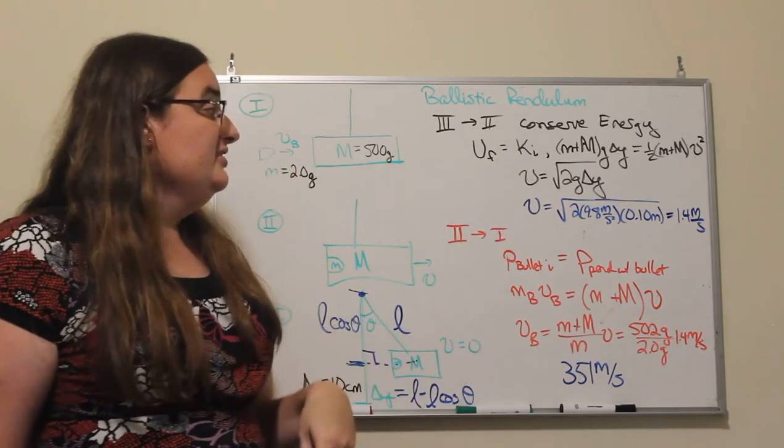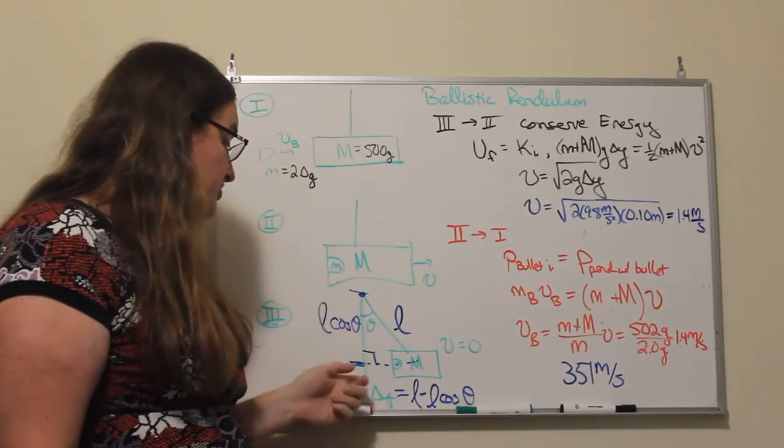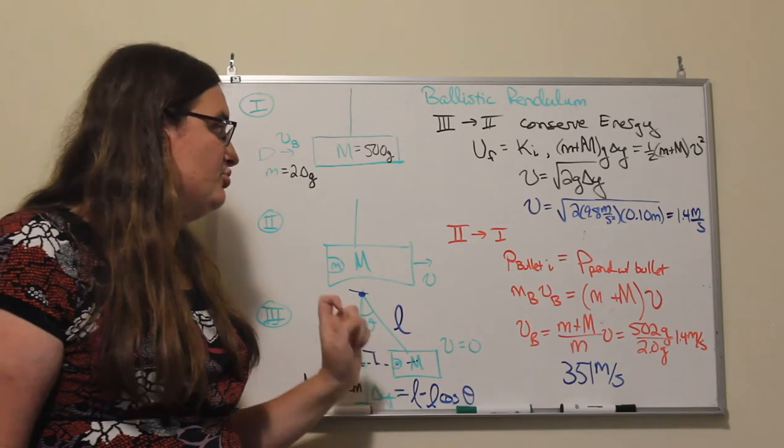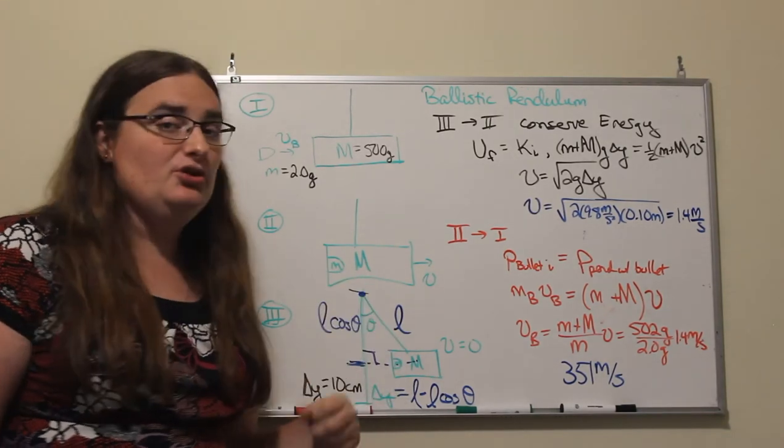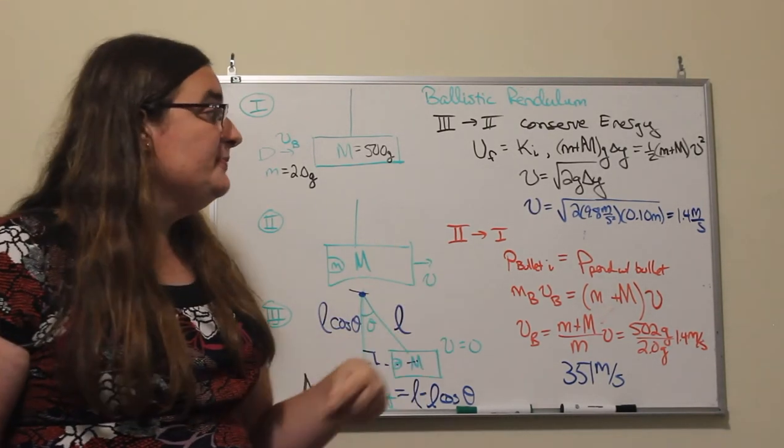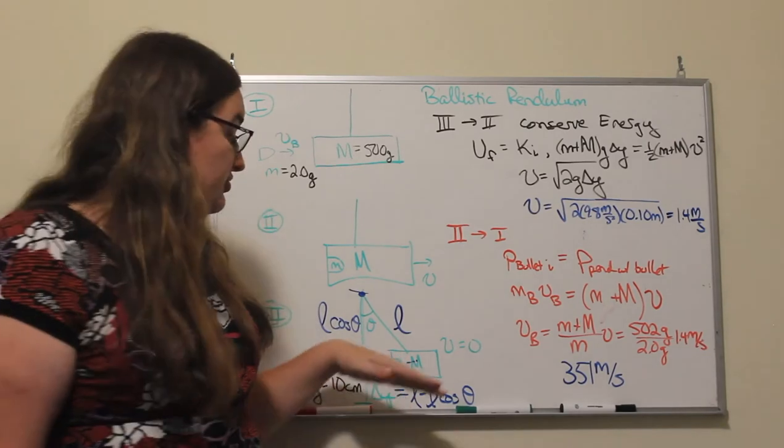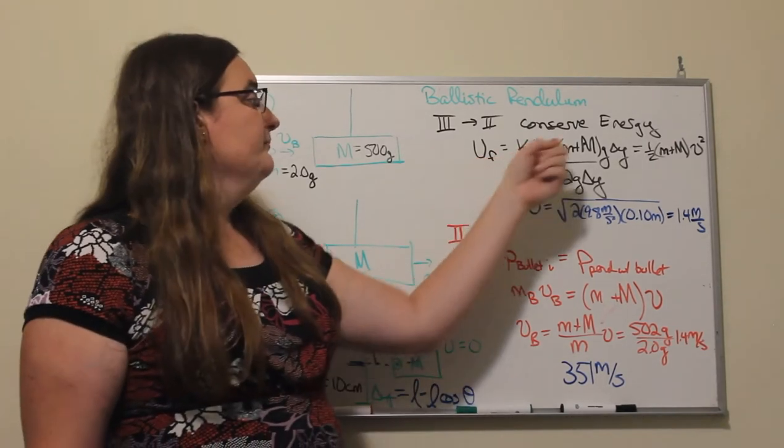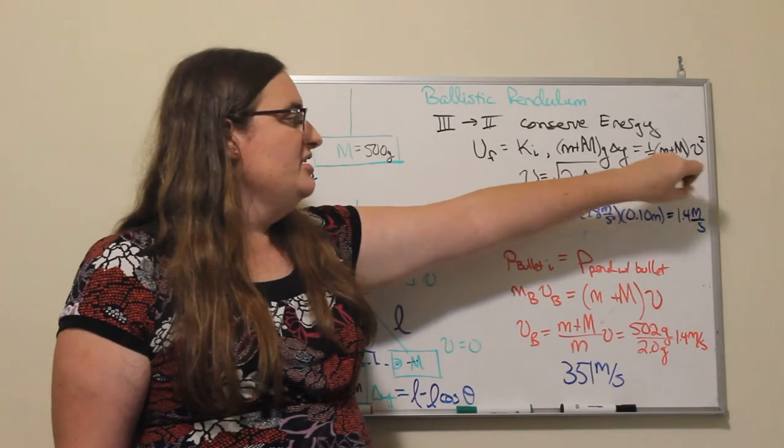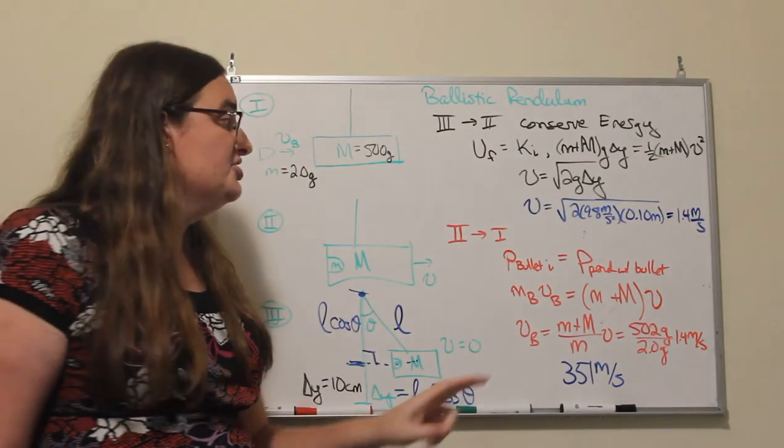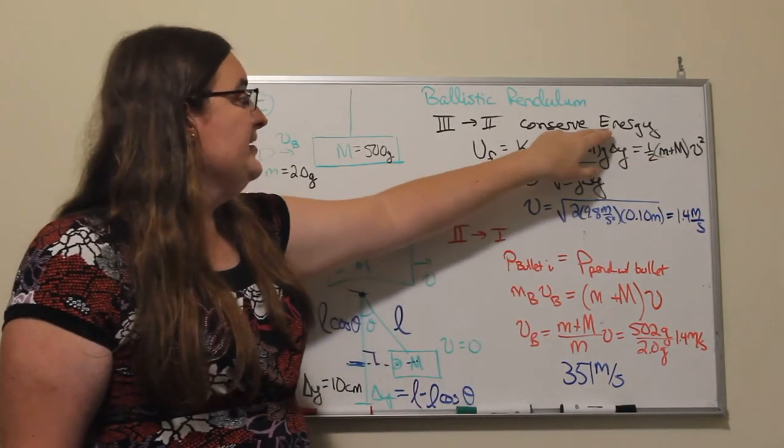And the initial kinetic energy is based on the motion at the bottom, which would be one-half times the total mass times the speed at the bottom squared. So when the kinetic energy goes to zero, that final potential energy equals the initial kinetic energy, and for this first piece...